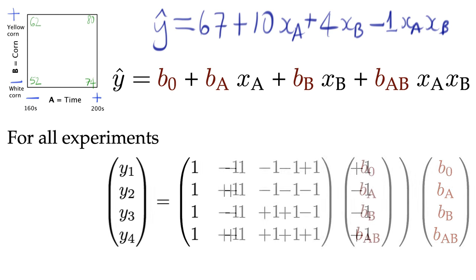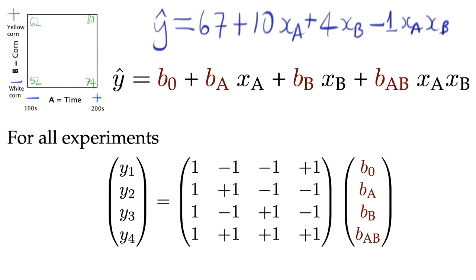This entire set of equations can be written as vector y equals matrix x times vector b. Now for those of you with some background in linear algebra or least squares, we'll recognize that the solution to the set of equations is b equals x transpose x inverse multiplied by x transpose y. If you don't have that experience, don't worry. The computer software will solve these equations very efficiently for us. That's what computers are good for.